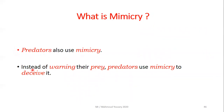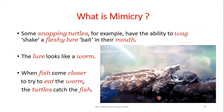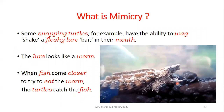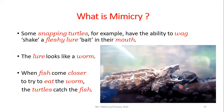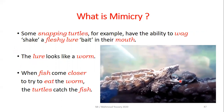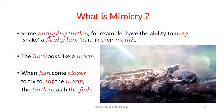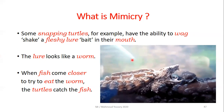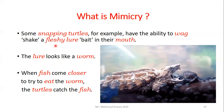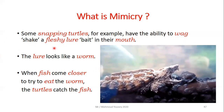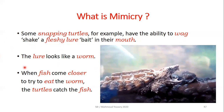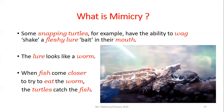Predators also use mimicry - instead of warning their prey, predators use mimicry to deceive it. For example, the snapping turtle has a part of its tongue that looks like a worm, which acts as a lure or bait. Some snapping turtles have the ability to wag this fleshy lure in their mouth. When a fish comes closer to try to eat the worm, the turtle catches the fish.